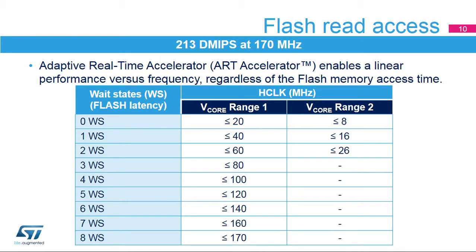To read the flash memory, it is required to configure the number of wait states to be inserted in a read access depending on the clock frequency and the voltage scaling range. In range 1, the flash memory can be accessed up to 170 MHz with seven wait states, and with zero wait states up to 20 MHz. For range 2, it is up to 26 MHz with two wait states. Thanks to the ART accelerator, the program can be executed with zero wait states independent of clock frequency, providing almost linear performance — 213 Dhrystone MIPS at 170 MHz.